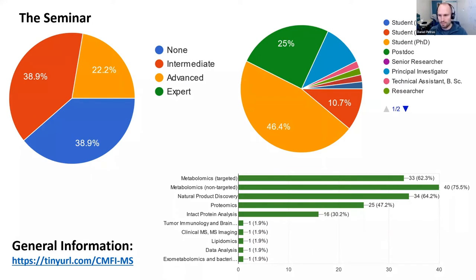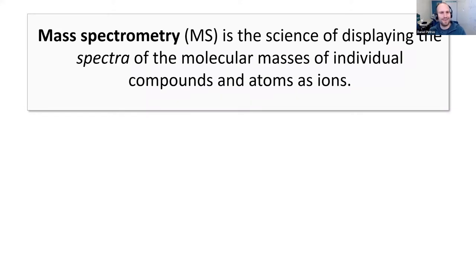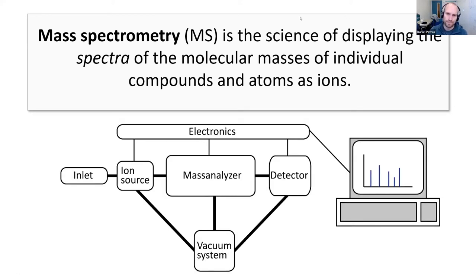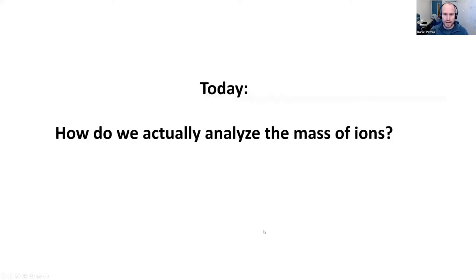The main take-home message from last time, which I want to reiterate, is that the mass spec tools we present here and use in our lab ionize molecules and then measure mass per charge — that was the most important thing from last time. We were talking briefly about how a mass spec is built up, in particular the ionization of molecules and the types of inlets. Today we want to talk about how, after we ionize molecules, we actually analyze their mass — that's the key thing of the mass spec — what physical principles can we use to determine mass very accurately.